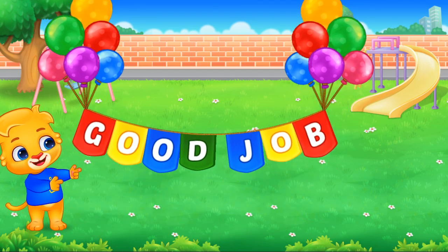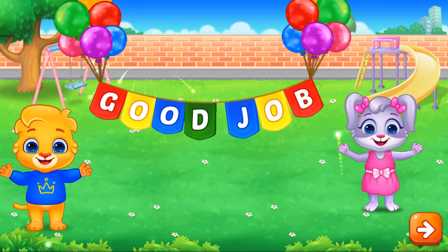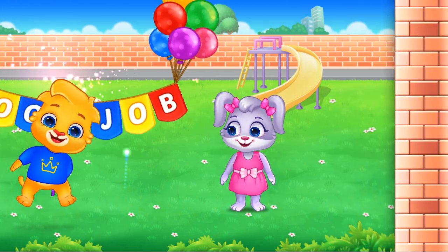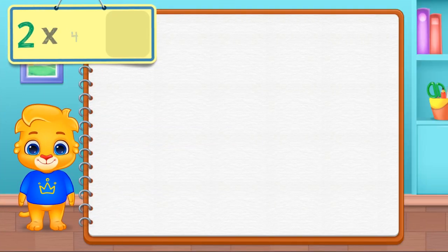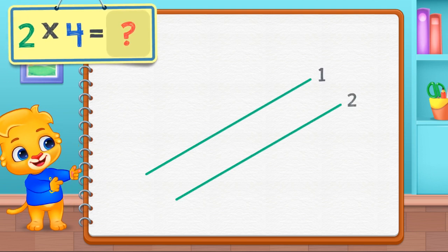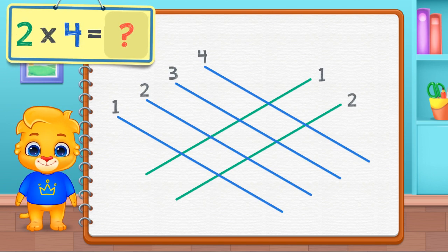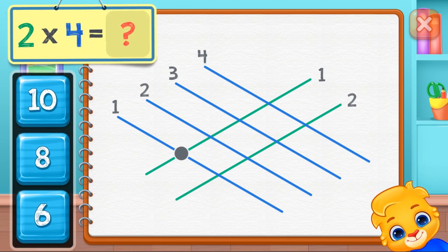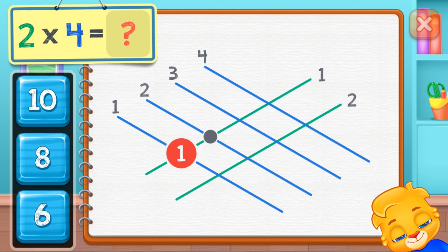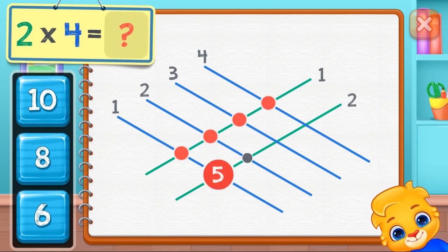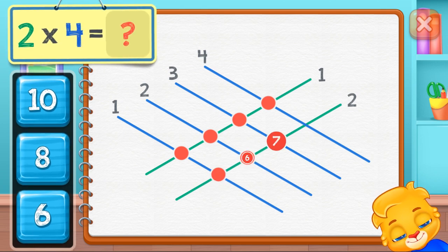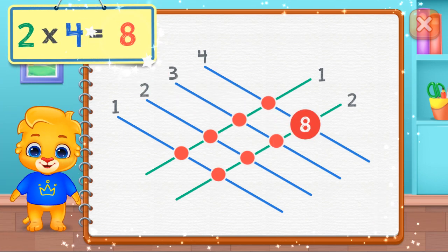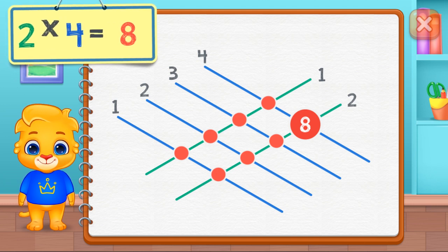Good job! Two times four equals — count the intersection points: one, two, three, four, five, six, seven, eight. Two times four equals eight.